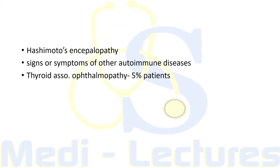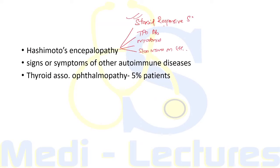Hashimoto's encephalopathy is a steroid-responsive syndrome characterized by thyroid peroxidase antibodies, myoclonus, and slow waves on EEG, although its relation with hypothyroidism is not established. Signs or symptoms of other autoimmune diseases can be seen, like vitiligo, pernicious anemia, Addison's disease, type 1 diabetes, and alopecia areata.